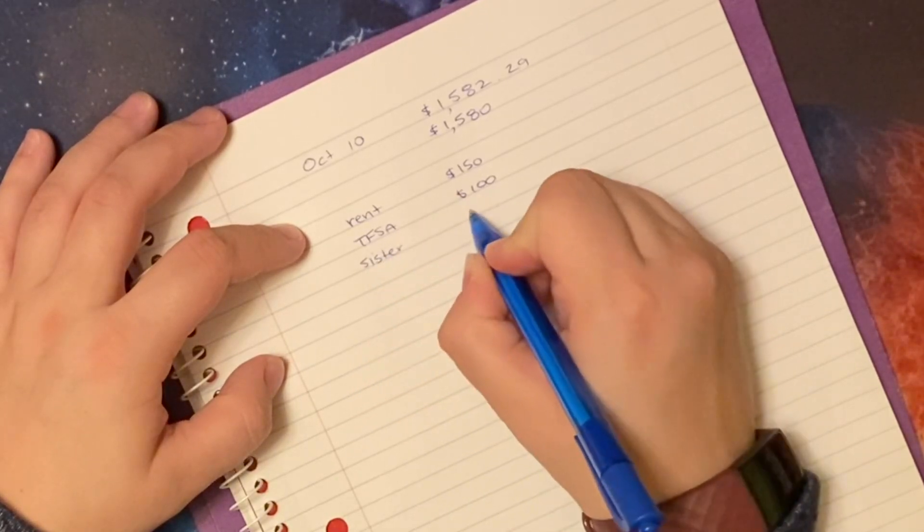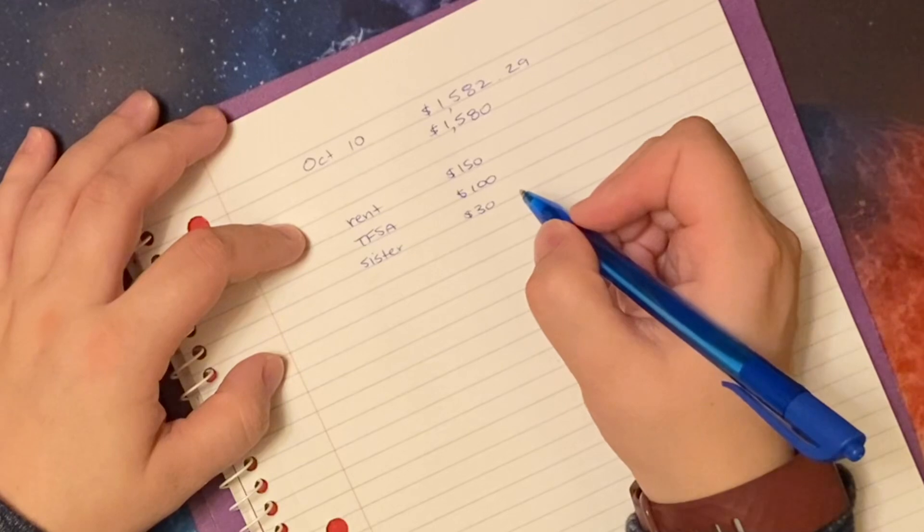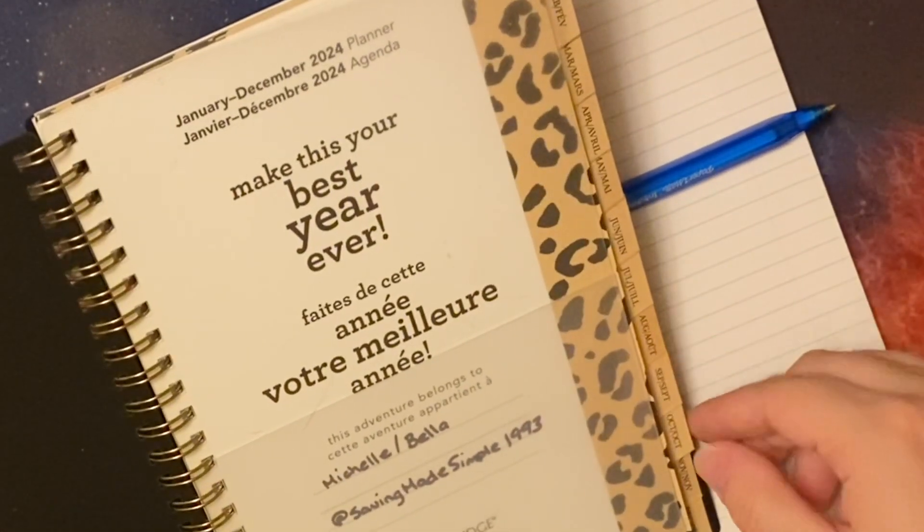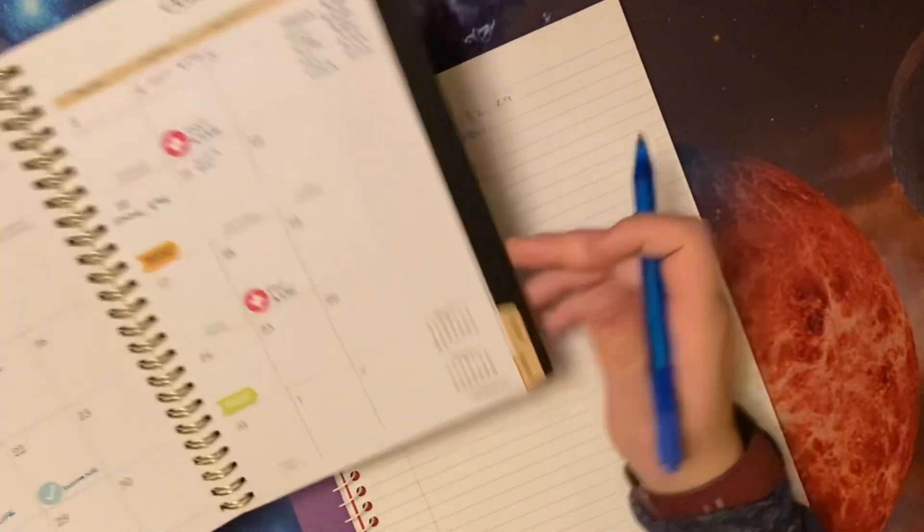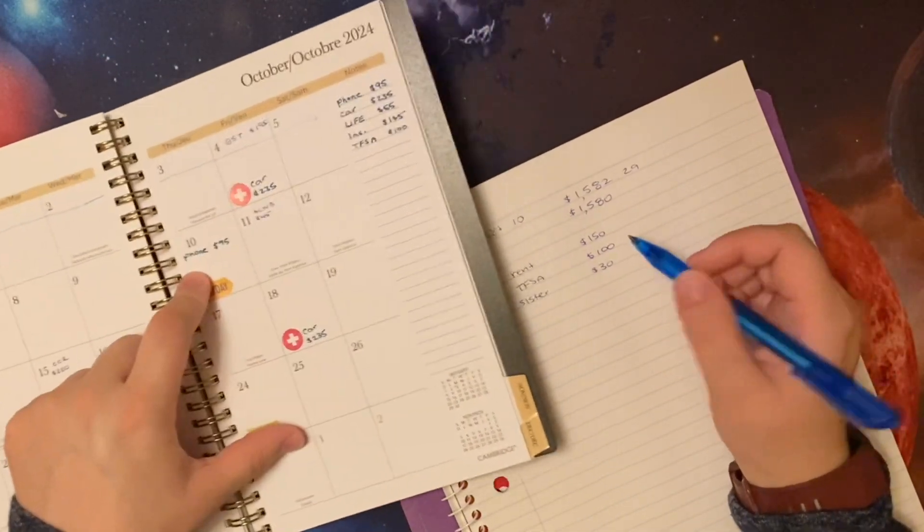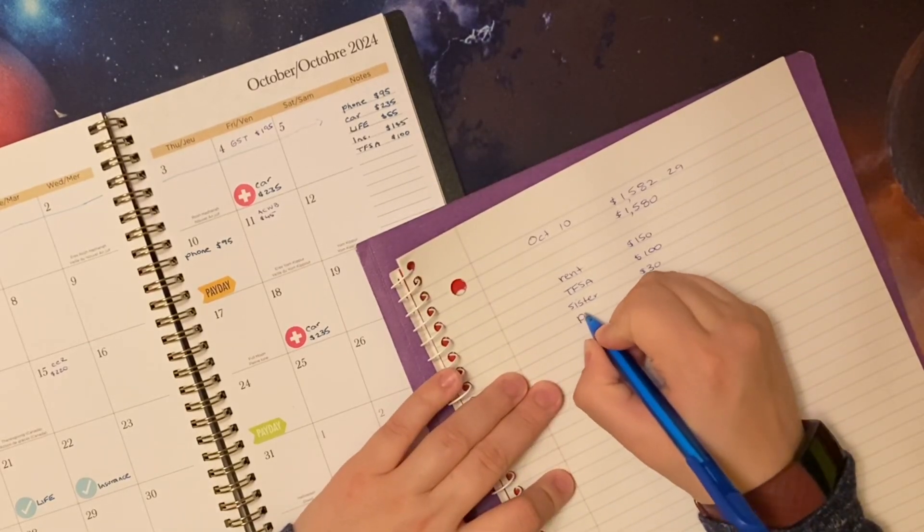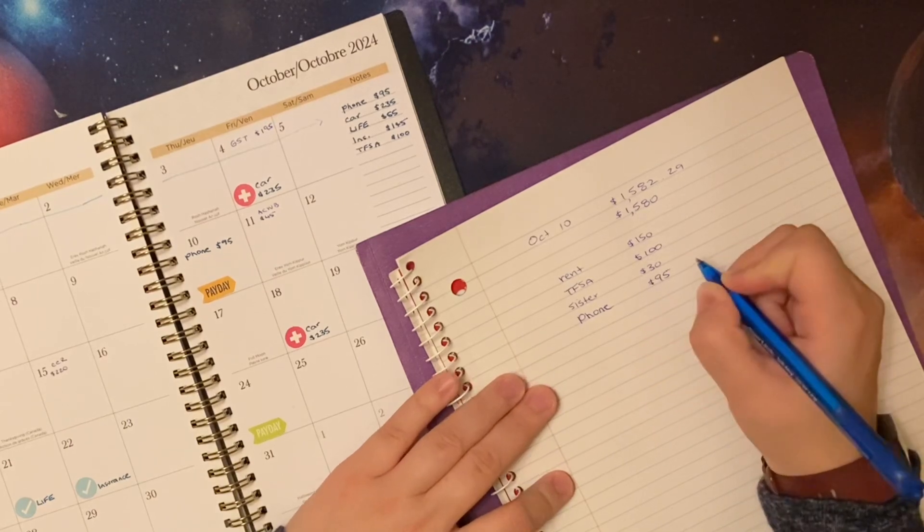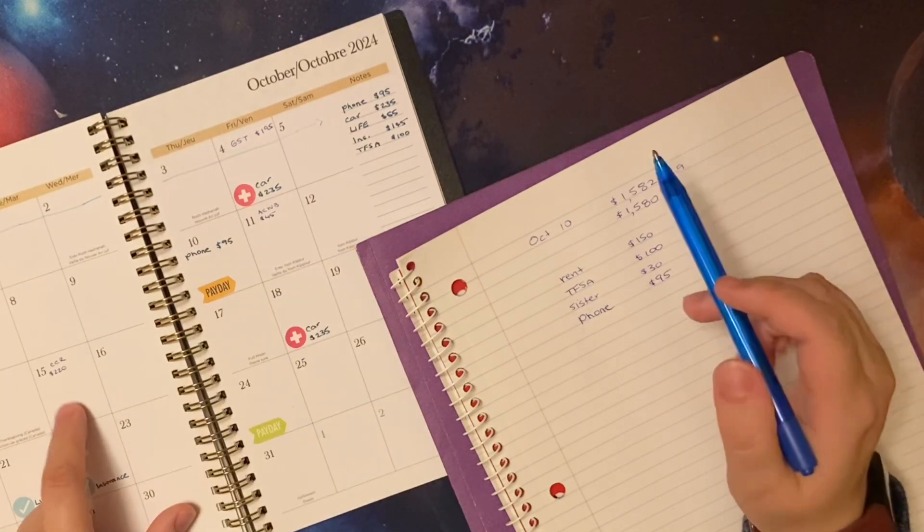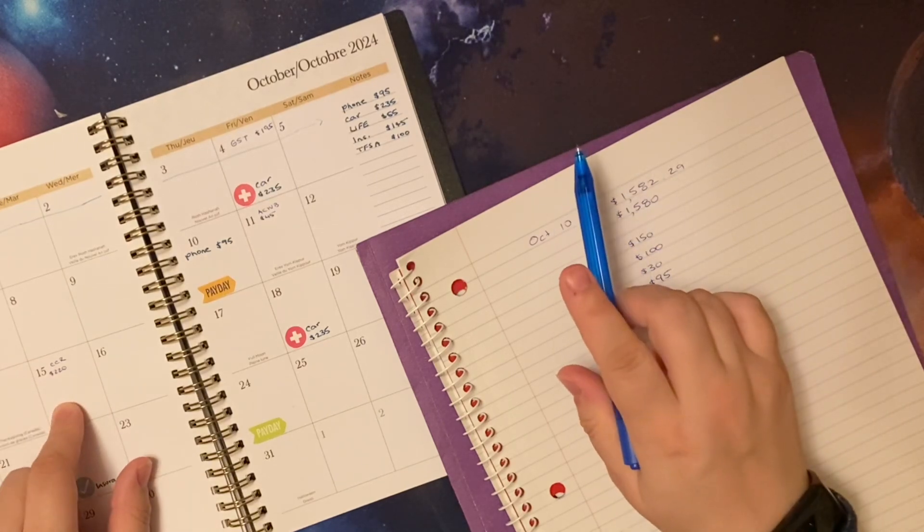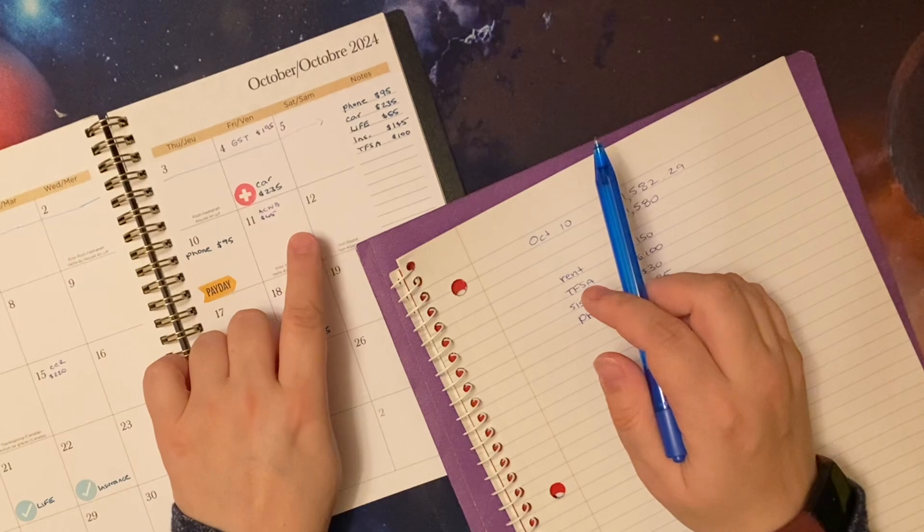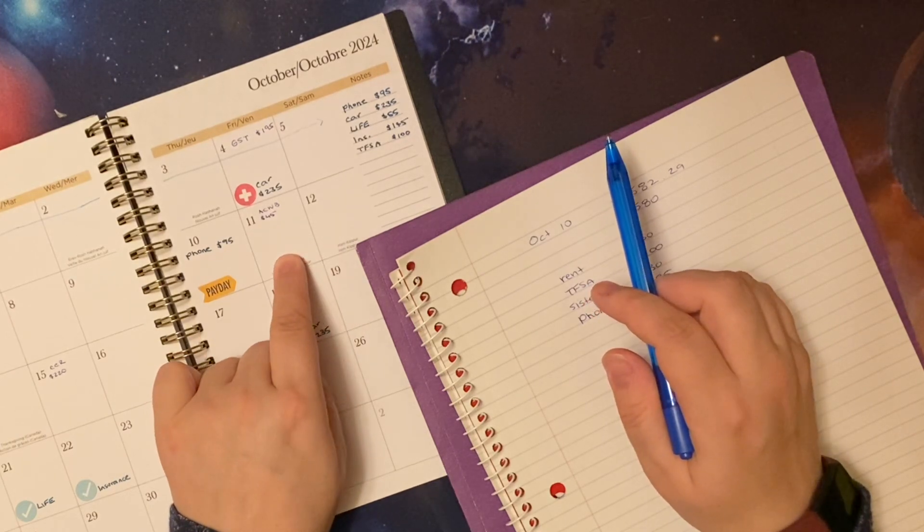Then obviously my sister, we have the floating $30. Let's see what bills we have. I know it's a heavy bill period because last week wasn't. Obviously we have my phone bill which is $95. We have money coming in on the 11th which will be used for minis. We have the carbon rebate coming in on the 15th which I will be doing a budget and stuff.